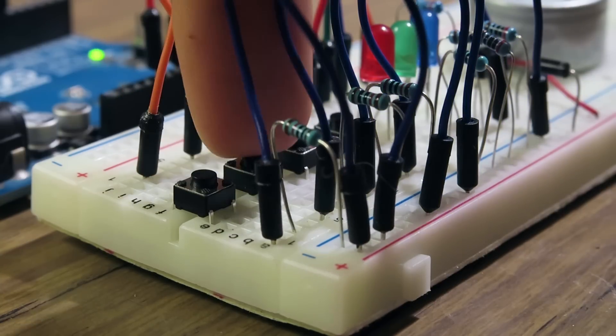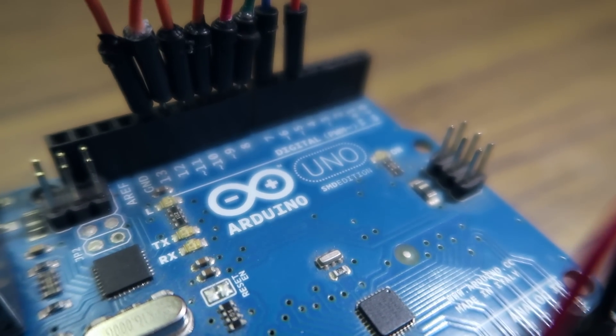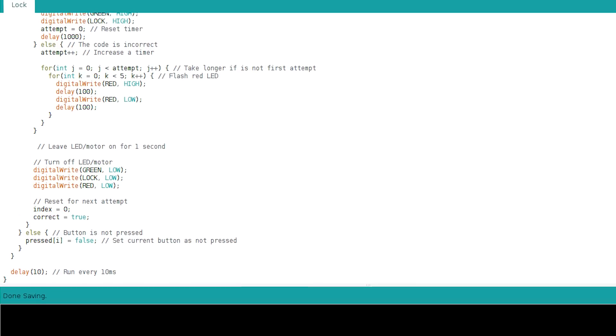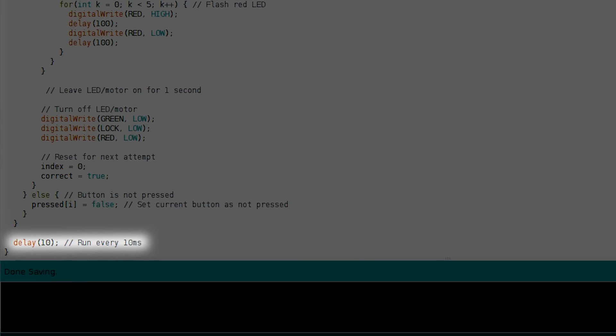Buttons aren't perfect, and the contacts inside will bounce slightly. As the Arduino runs very fast, it may think the button has been pressed multiple times. To fix this, we need to slow the Arduino down so any bouncing will have settled by the time the button is checked.